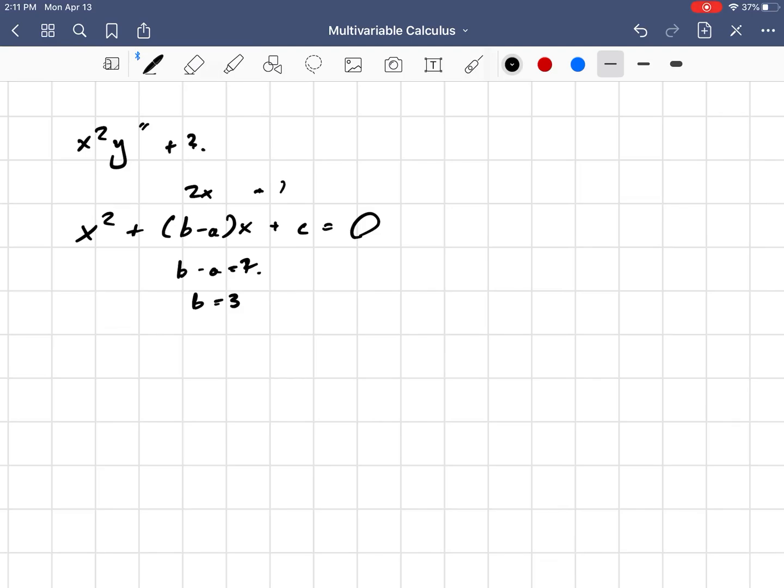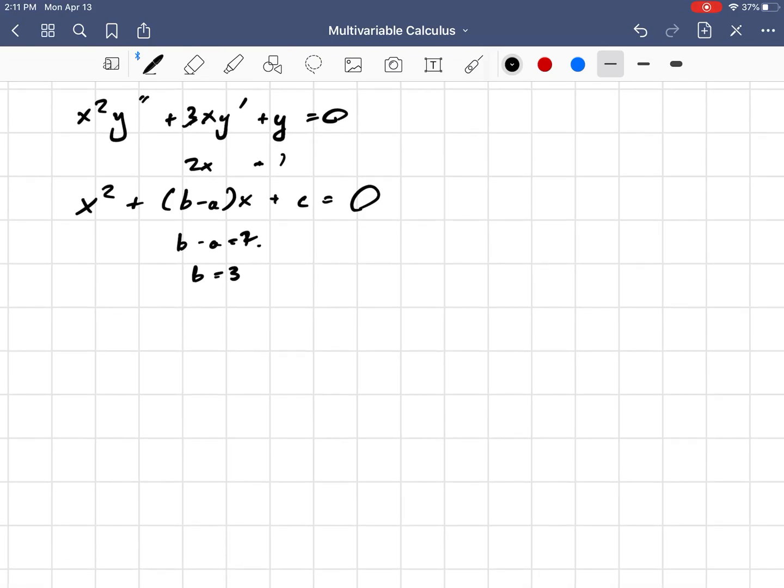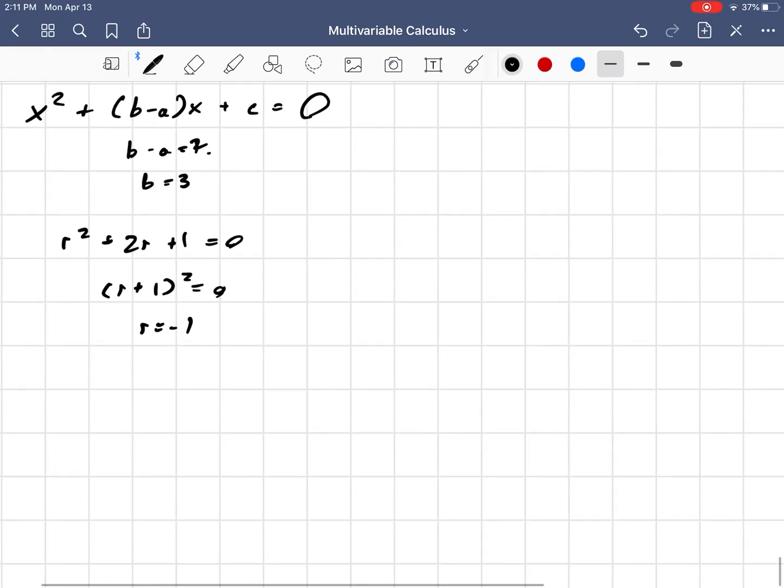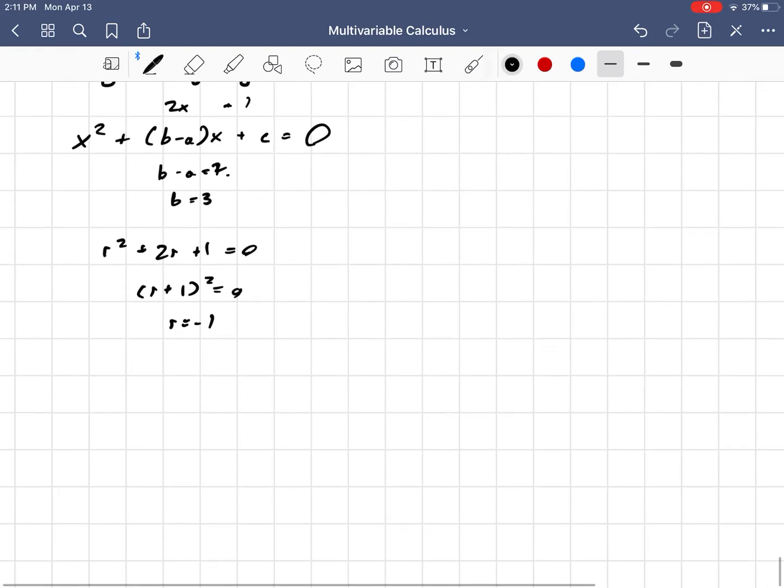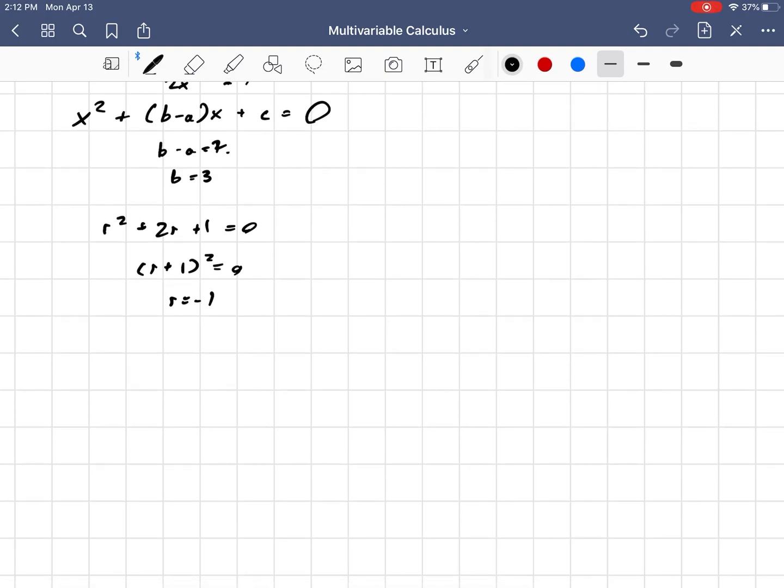Or, my bad, I want b - a to be equal to 2, so b is 3. So x² + 3xy' plus y is equal to 0. So now we know our auxiliary equation is r² + 3 - 1, or 2r, plus 1 equals 0, (r+1)² equals 0, or r is equal to negative 1.